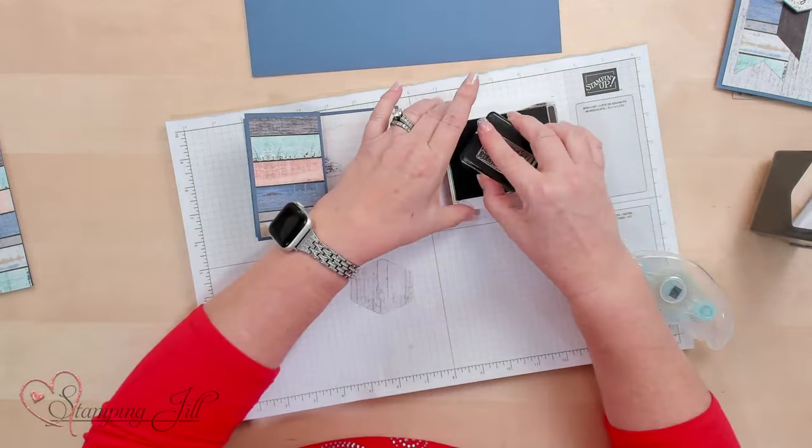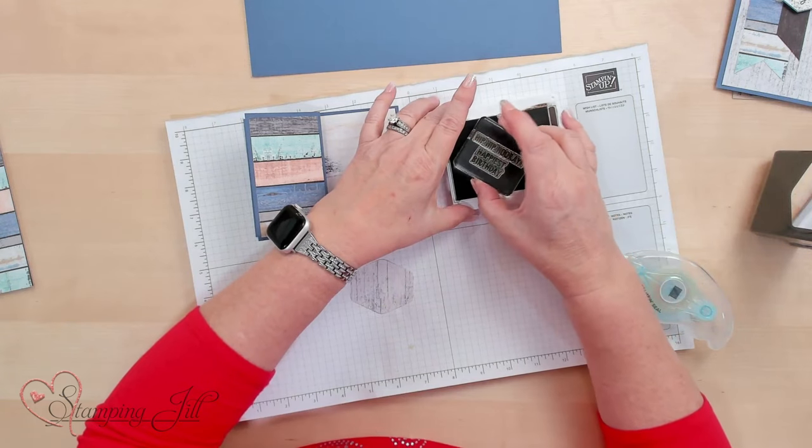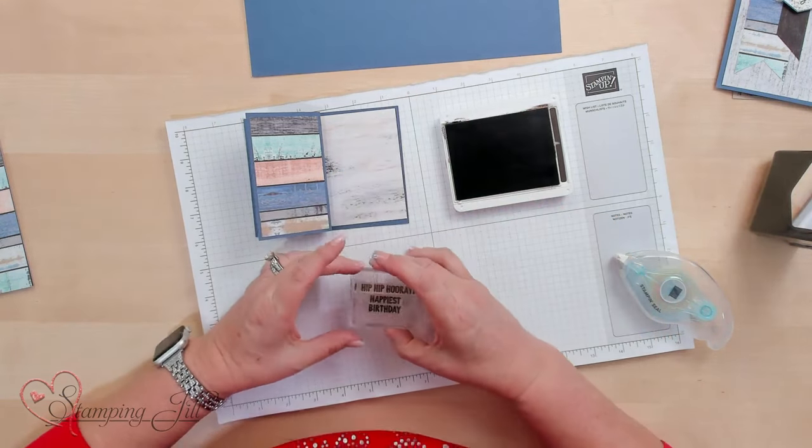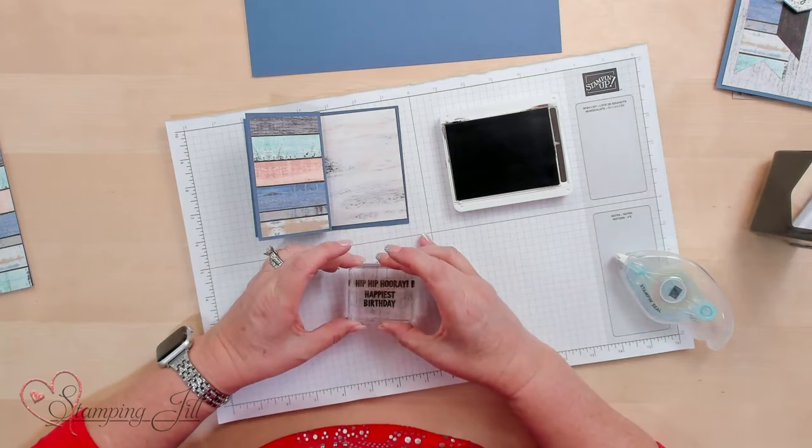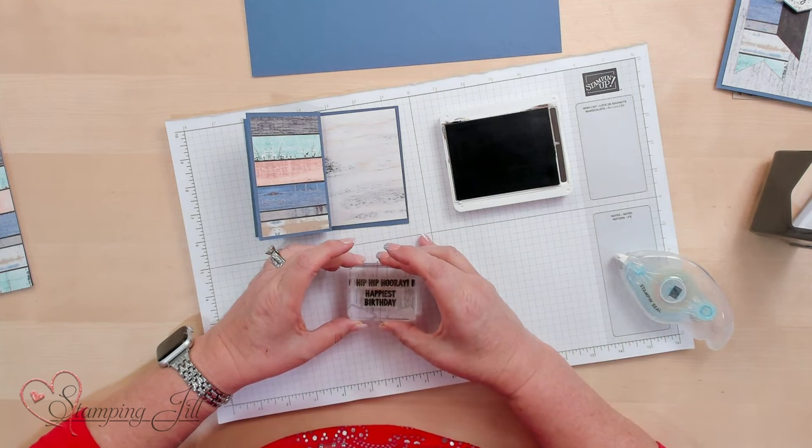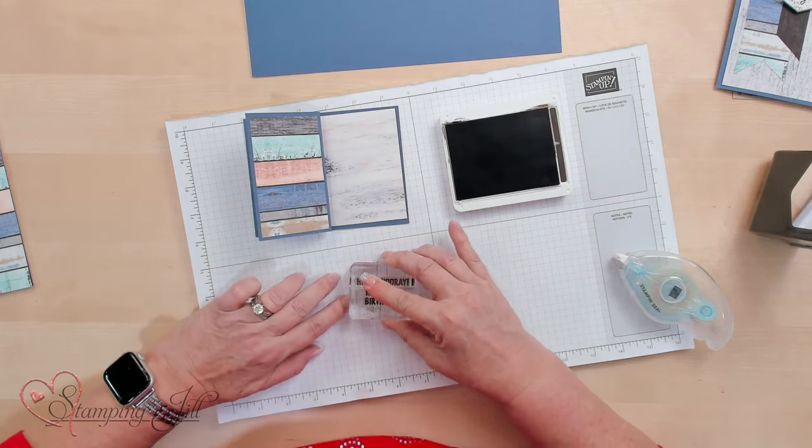I'm using the stamp set called Round We Go and I like it because it's photopolymer and I can see exactly where I'm stamping Hip Hop Hooray Happiest Birthday. I put the two stamps together.